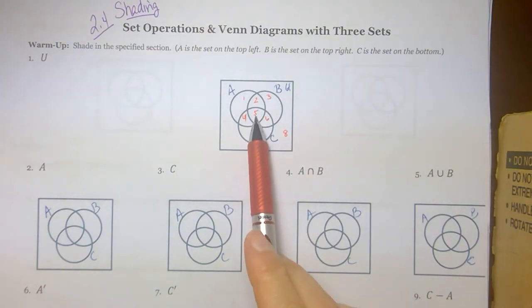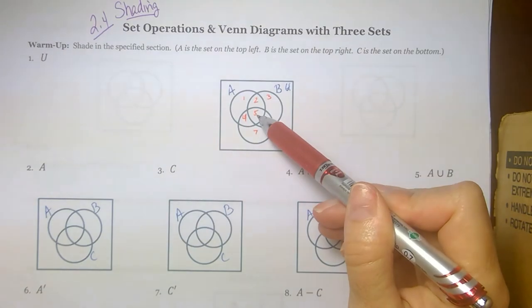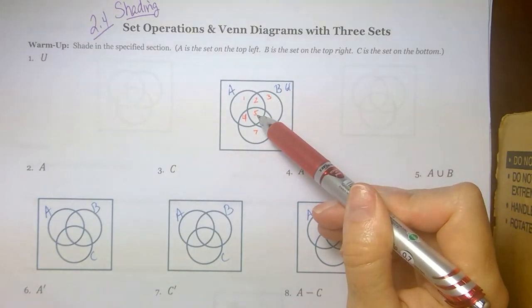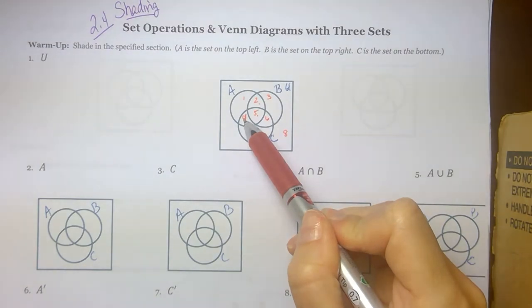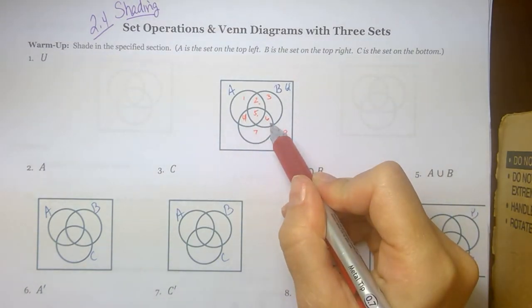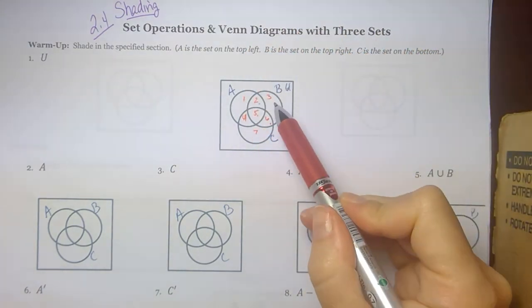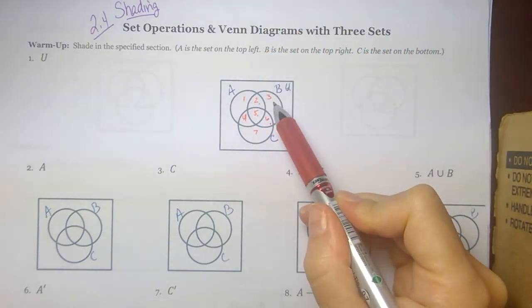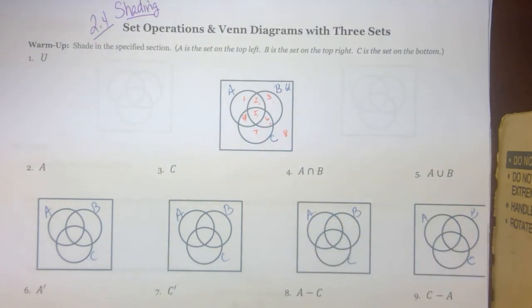Region five is part of all three loops — it's part of A, B, and C. Region two is part of A and B. Region four is part of A and C. Region six is part of B and C. Region one is just A. Region three is just B. Region seven is just C.